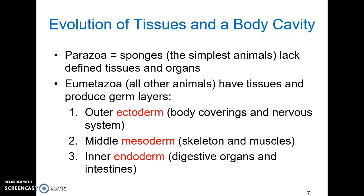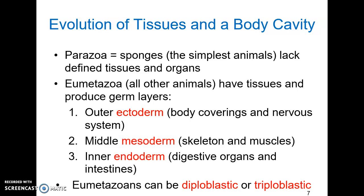Eumetazoans have three possible layers of tissues. The outer ectoderm forms the outer lining of the body and the nervous system. The middle mesoderm forms all the connective tissue — like blood and the skeleton — plus the muscles of the visceral organs and skeletal muscle. The inner endoderm forms the inner lining of the digestive tract and intestines. Eumetazoans can be either diploblastic or triploblastic. Diploblastic organisms have two germ layers — the endoderm and the ectoderm — and typically do not have organs; cnidarians are good examples. All bilaterally symmetrical animals have endoderm, ectoderm, and mesoderm, plus complex organs, and are termed triploblastic.